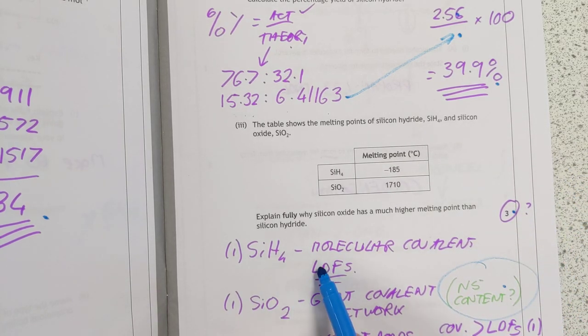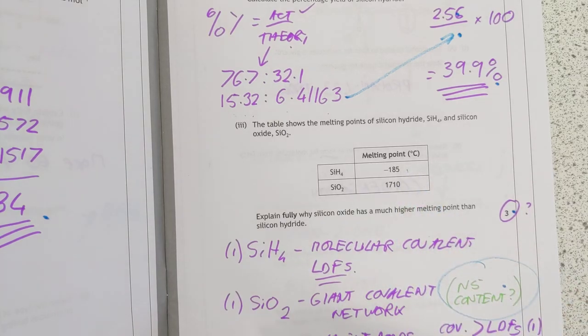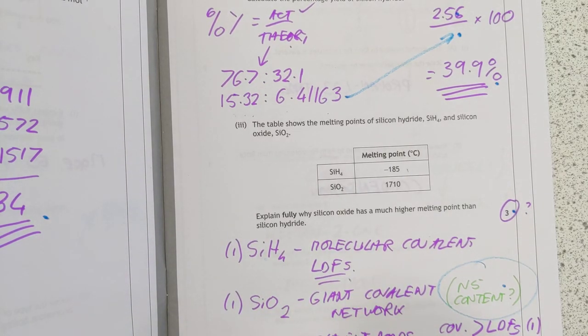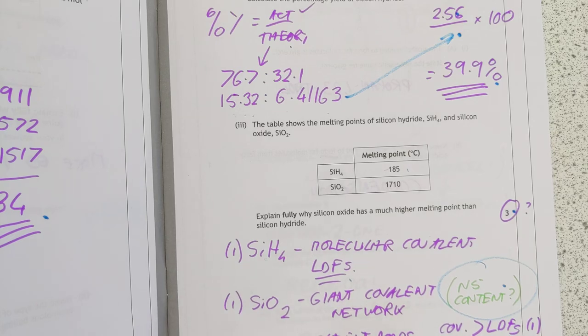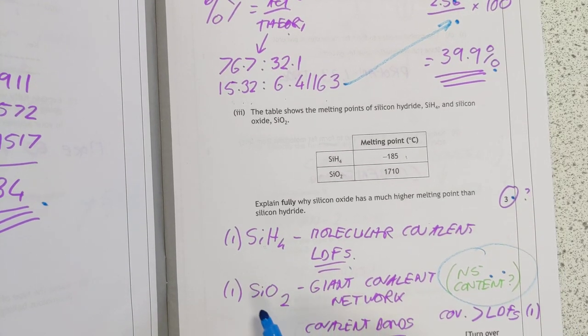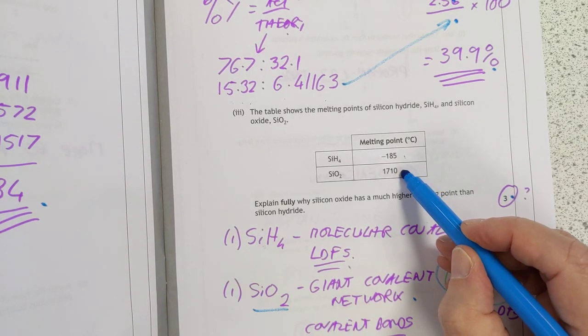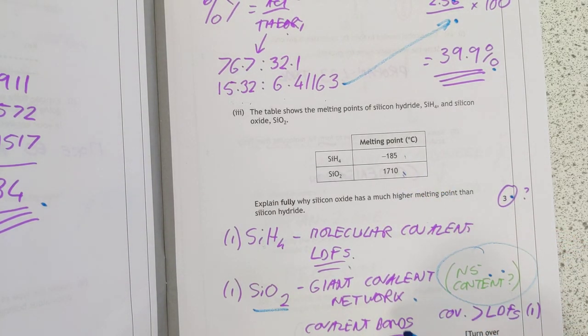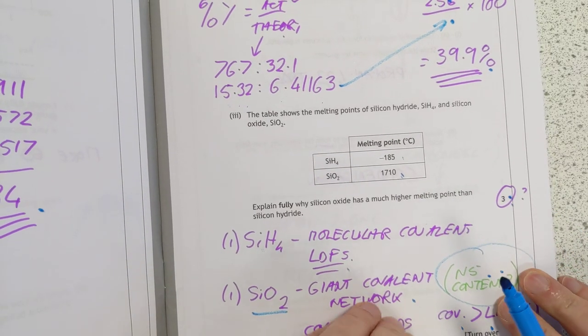Silicon hydride is molecular covalent. You can tell that from its boiling point. Therefore it will be held together, not together as in in there, but another one of these to its neighboring SiH4 by London Dispersion Forces. Silicon dioxide is the bit that had me saying this is interesting, because this is actually N5 content as far as I'm aware. I'm hoping you remember from last year that silicon dioxide is a giant covalent network. The clue is there of course, even if you didn't remember it, the clue is in the melting point. Therefore it's held together by covalent bonds, and covalent bonds are much stronger than LDFs. I think that's how you get your three marks.